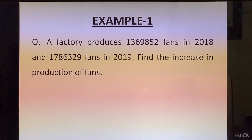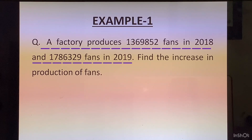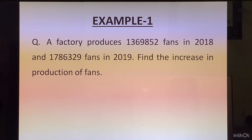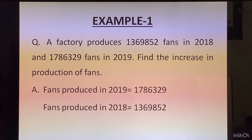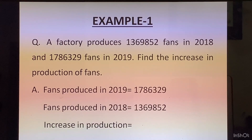To make the sentences for the word problem we will read one portion of the question at a time. The first part is: a factory produces 1,369,852 fans in 2018 and 1,786,329 fans in 2019. Now we will write the higher number on top — that is the number of fans produced in 2019. Next statement will be fans produced in 2018. You could also just write a subtraction sign here and write 'increase in production' and subtract it.